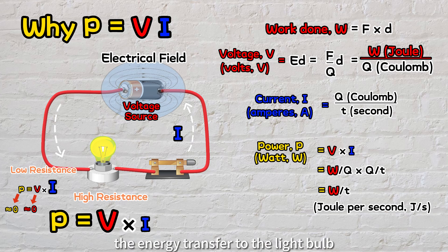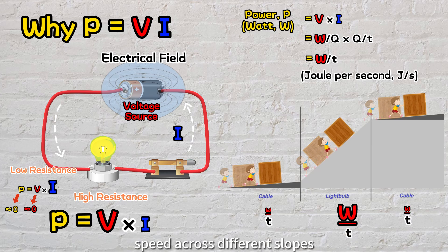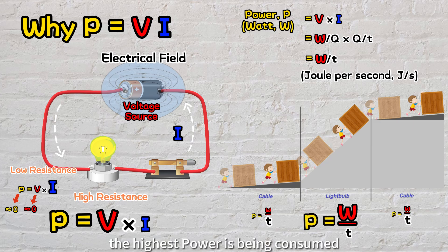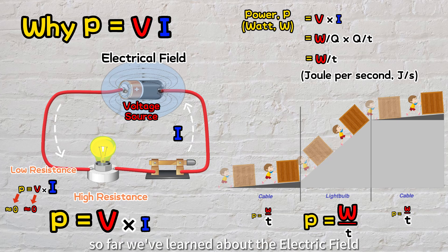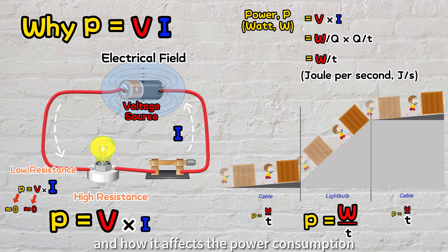Therefore, to highlight again, the energy transferred to the light bulb every second is the power. Similarly, if the boxes are being pushed at the same speed across different slopes, just like current is the same across the series circuit, the highest power is being consumed when moving the box up the steeper slope and less power is used at the gentle slope. So far we've learned about the electric field, current, voltage, and power consumption. These concepts are essential in understanding how charges move through different components in the circuit, like the cable and light bulb, and how it affects the power consumption.